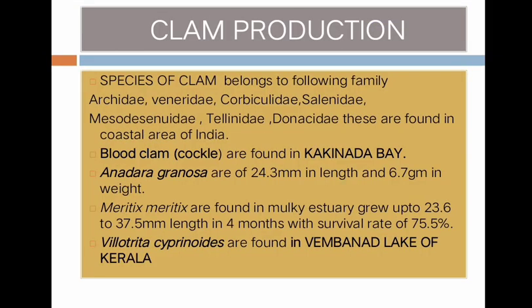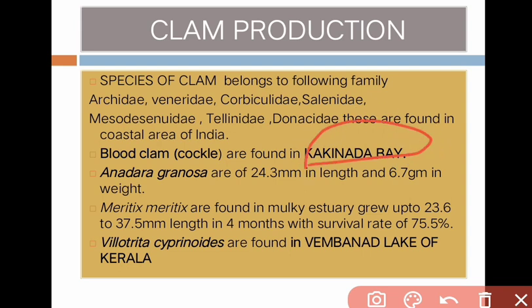Next is clam production. Species of clam belong to families Arcidae, Veneridae, Corbiculidae, Solenidae, Mesodesmatidae, Tellinidae, and Donacidae. These are found in coastal areas of India. Blood clam Cockle are found in Kakinada Bay. Andragornosa are 24.3 mm in length and 6.7 grams in weight, obtained from proclaimed rearing or culture. Meretrix are found in Malpe estuary and grew up to 23.6 to 37.5 mm length in 4 months with a survival rate of 75.5%. Villorita cyprinoides are found in Vembanad Lake of Kerala.